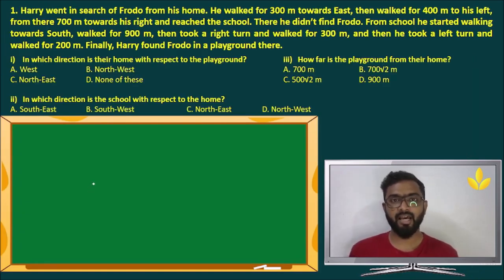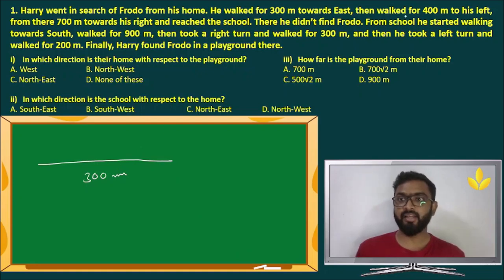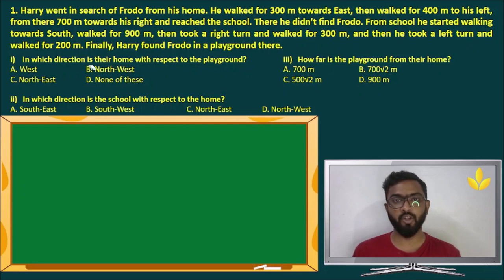So this question reads, Harry went in search of Frodo from his home. He walked 300 meters towards east. Now the first kind of mistake that a lot of people will make is since 300 meters is a pretty large distance, they will draw a long line for 300 meters, which makes sense. But they read, then he walked for 400 meters to his left and then 700 meters to his right. So by the time he reaches 700 meters, you will go outside your notebook. That is the issue.